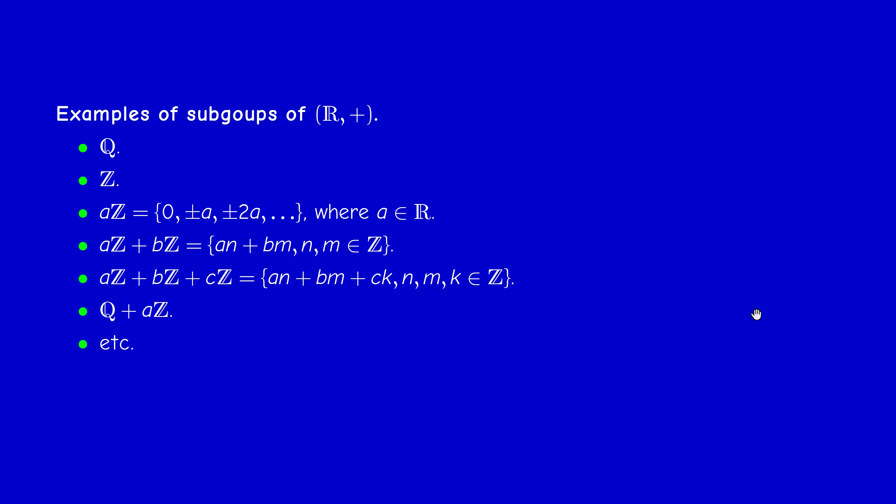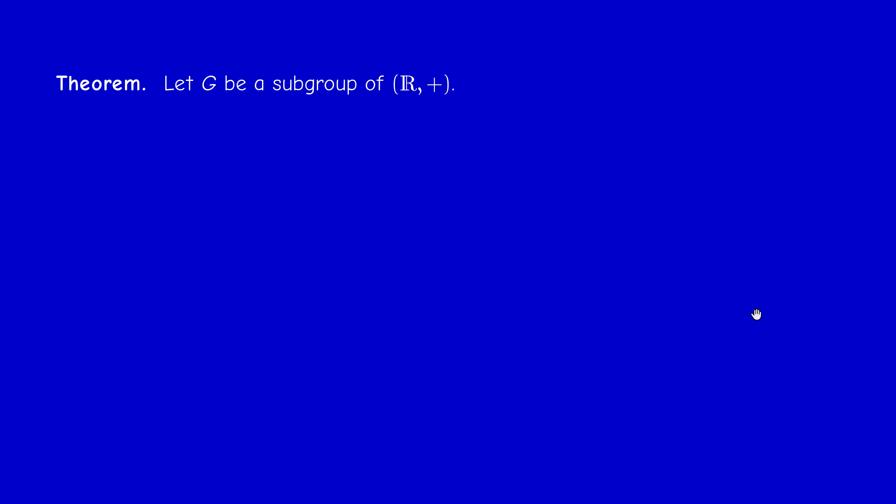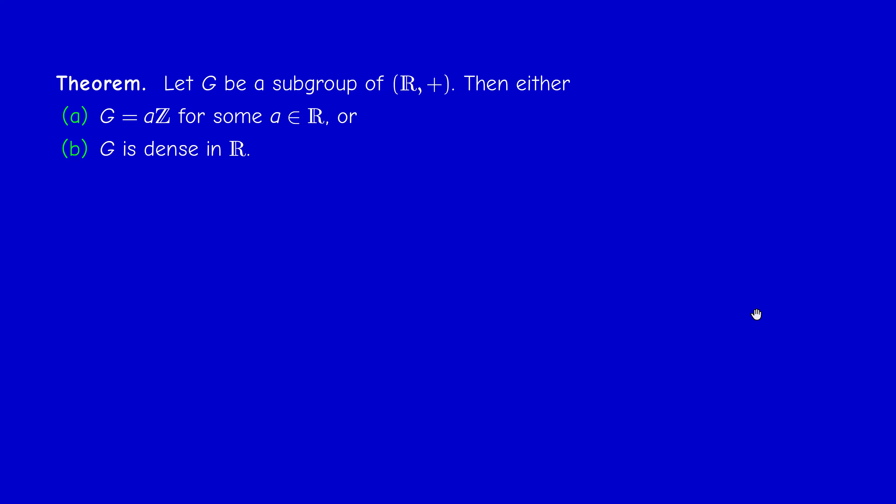Now I'm going to state a theorem which classifies the subgroups of R+ into two categories. If G is a subgroup of R+, then either G is of the form aZ for some a in R, or G is dense in R. For example, Q is dense in R, and we shall give other examples other than Q.